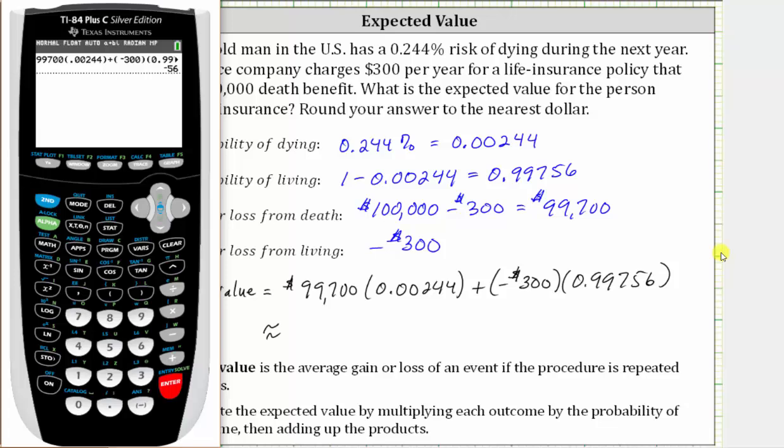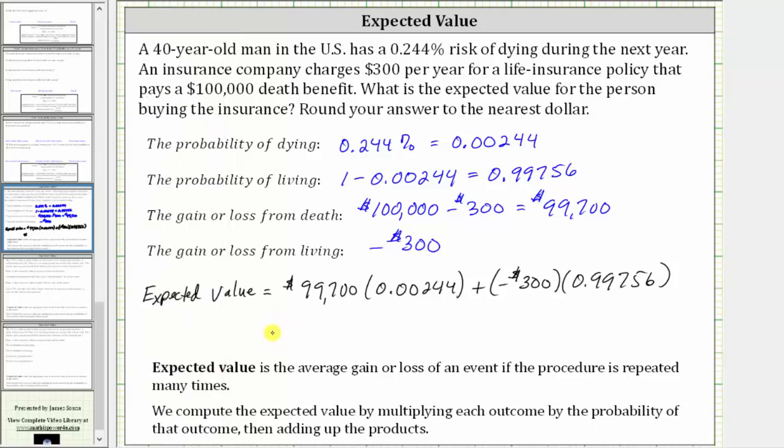The expected value is negative $56. This indicates the average loss for all the 40-year-old men buying the policy is going to be a loss of $56.